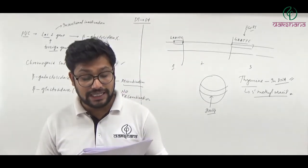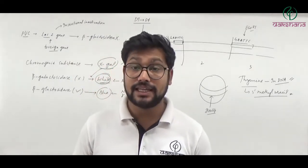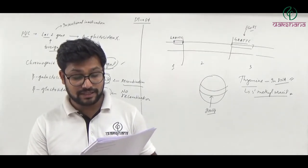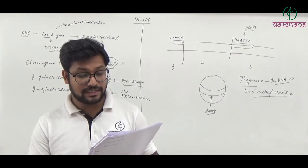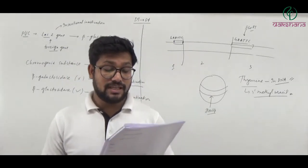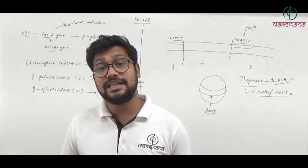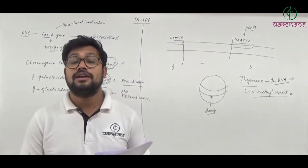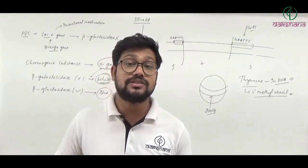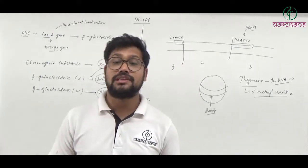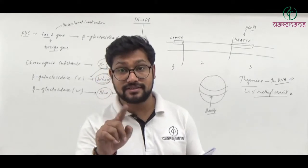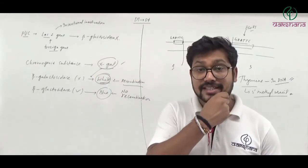Question number twenty-six: Tailing of hnRNA requires addition of A residues with the help of B. Here A = adenylic acid (200–300 adenylate residues) and B = poly A polymerase enzyme. I have already discussed this in transcription in eukaryotes. So question number twenty-six's first option is the right answer.